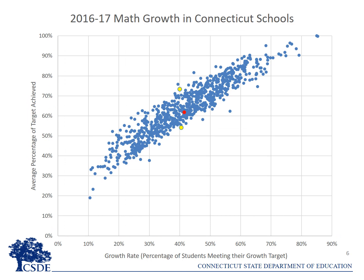Here's the corresponding chart for mathematics growth. Though the two metrics are highly correlated, there is some variation. For example, two schools with a similar growth rate — shown here in yellow — have different average percentages of target achieved. This indicates that in the school with the higher average percentage of target achieved, students not meeting their targets are, on average, substantively closer to their growth targets.